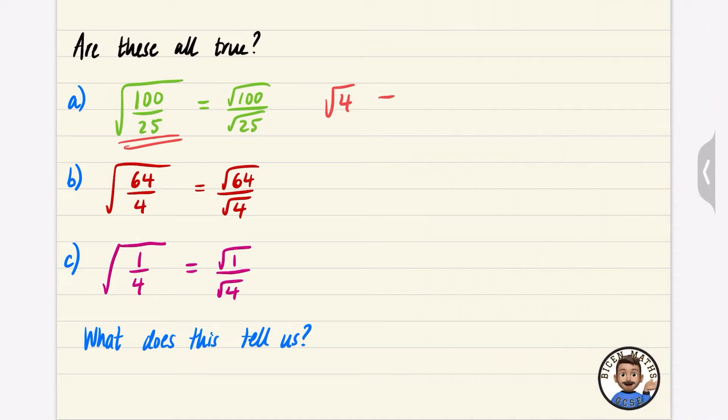So the left-hand side is the square root of 4. And the right-hand side is going to be the square root of 100. Well, the square root of 100 is 10, and the square root of 25 is 5. I better do another line of working here.